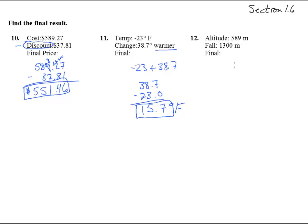Altitude is 589 meters, and they fall. That is subtraction, minus 1,300 meters. We better put that 1,300 on top so we can actually do the subtraction, 589.